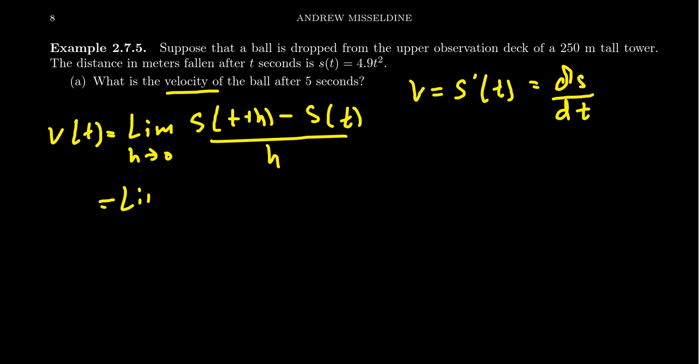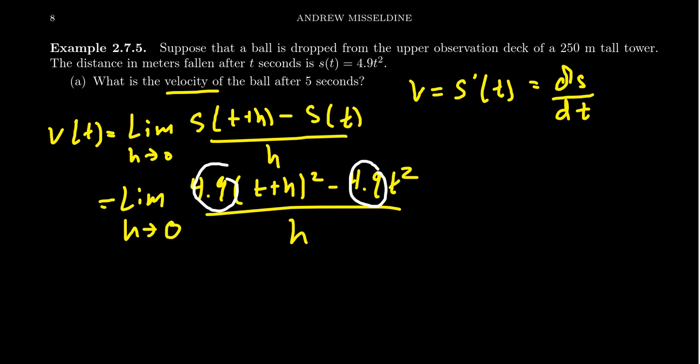So we want to compute this thing right here. Well, what do we know about our function? S is just 4.9t², so we're going to get 4.9 times (t+h)² minus 4.9t². This sits above an h as h goes to 0. You'll notice that in the numerator, the S(t+h) has a factor of 4.9, the S(t) also has a factor of 4.9. We could factor this 4.9 out from the numerator, and because it's a limit, we could actually factor this out of the whole limit calculation itself. And so we end up with 4.9 times the limit of (t+h)² minus t² all over h, as h goes to 0.